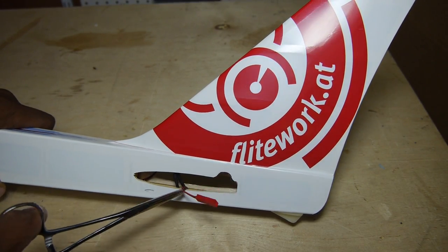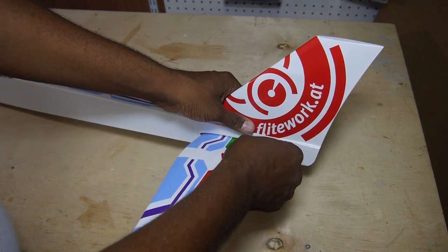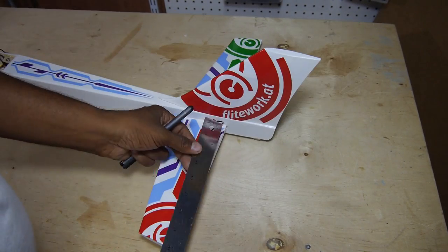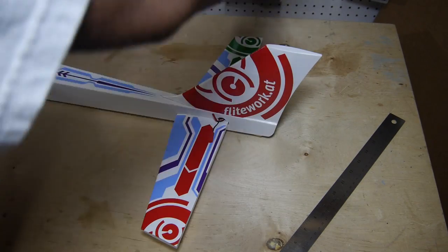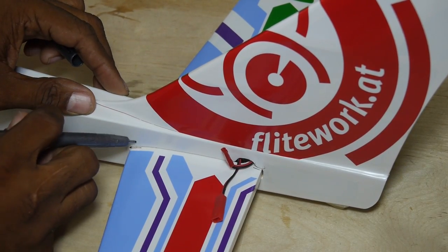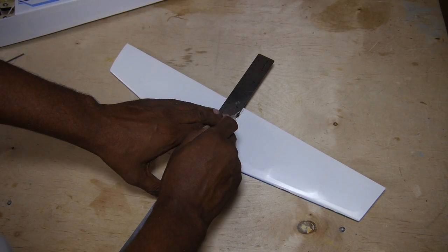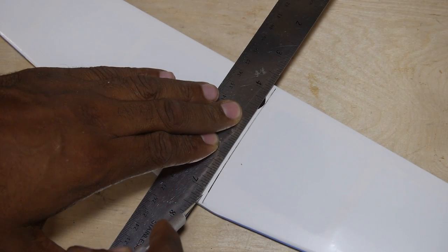Assembly starts with extracting the power connector from the tail. With that done, temporarily install the horizontal stab and mark the line to remove the covering. Be careful not to cut through the wood.